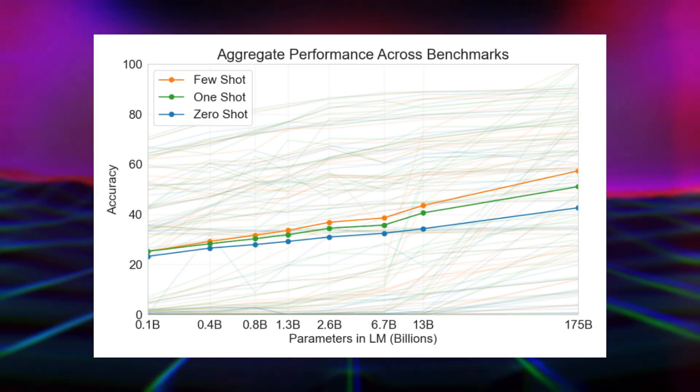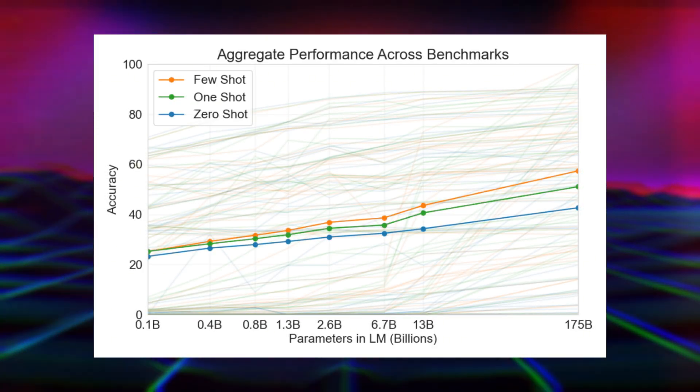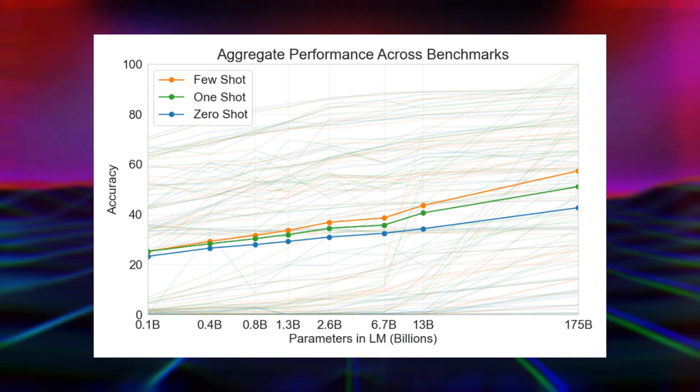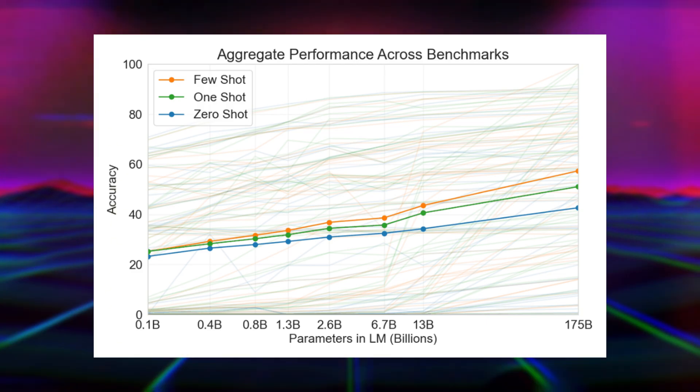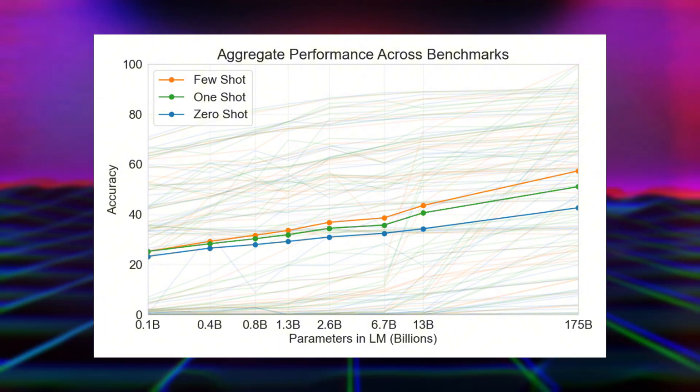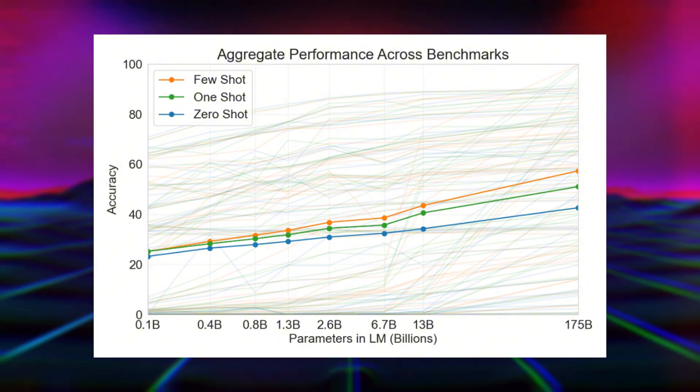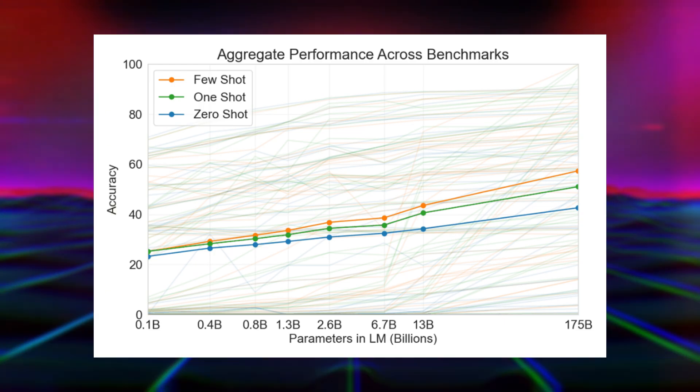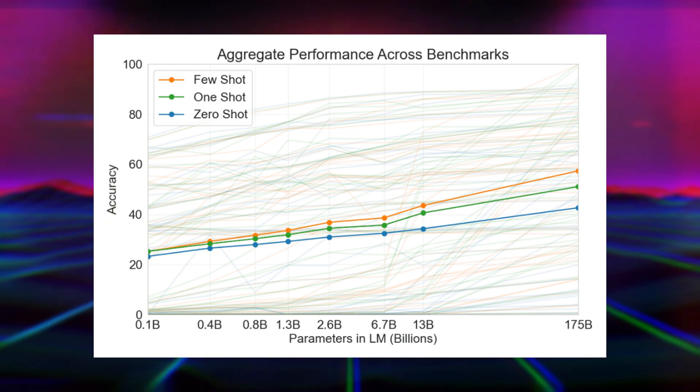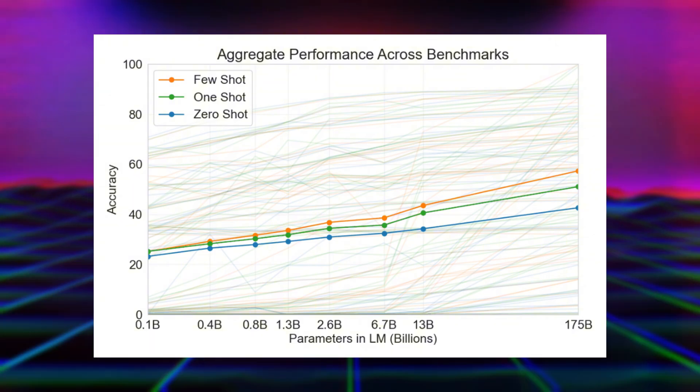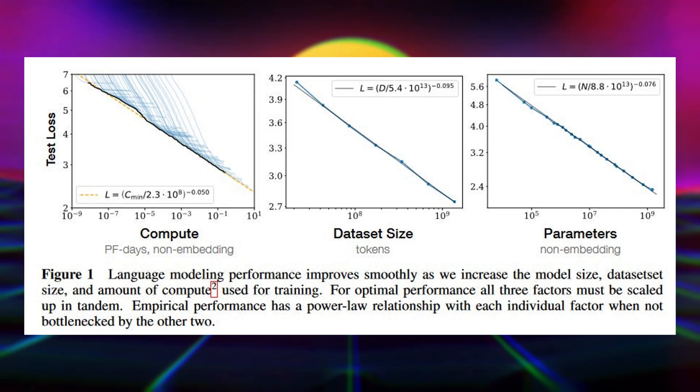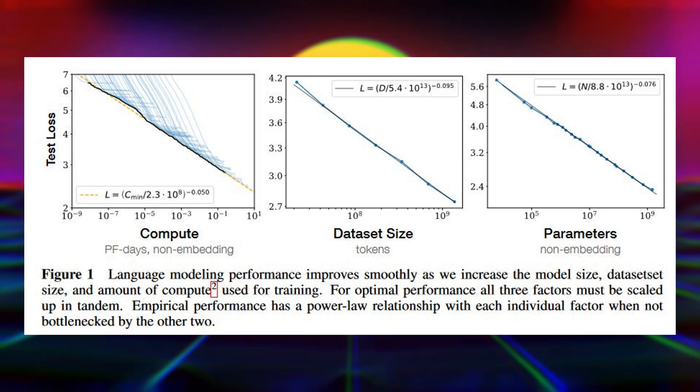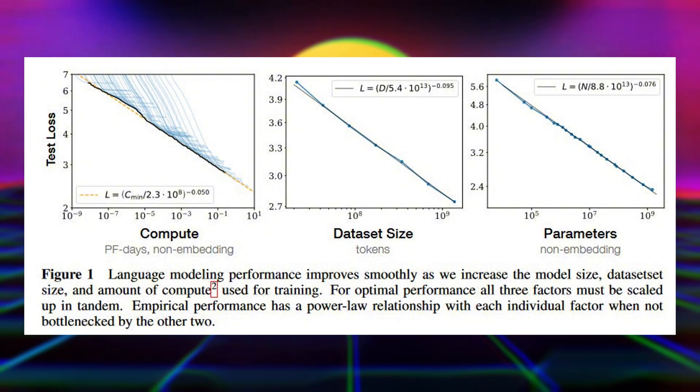This simple idea mirrors one of the most fascinating and controversial theories in artificial intelligence, the Scaling Hypothesis. Ten years ago, most AI researchers believed that building intelligent systems required discovering new breakthrough algorithms. They thought we needed to crack the code of intelligence itself. But what if they were wrong? What if intelligence emerges naturally when you simply make neural networks bigger and train them on more data? This is the essence of the Scaling Hypothesis.